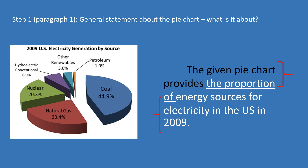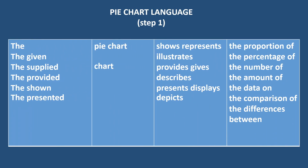Notice that the statement begins with an introductory phrase — "the given pie chart provides" — followed by pie chart language describing the quantitative data, which is "the proportion of," and then the rest of the sentence talks about what the chart is about: sources for electricity in the U.S. in 2009. It is always better to rephrase the title rather than to copy it verbatim. The source of the pie chart is not mentioned here as it is not provided.